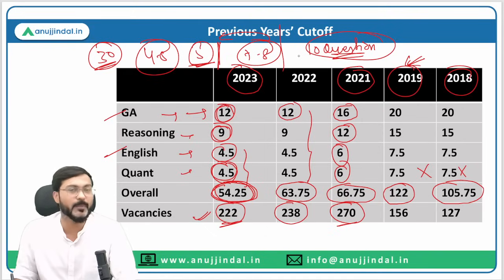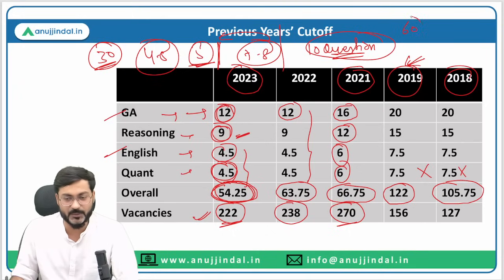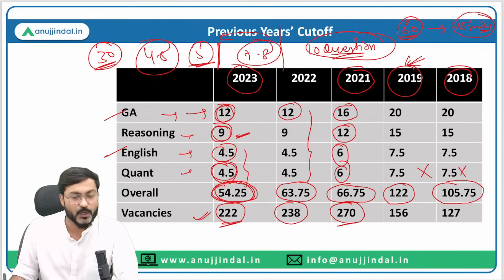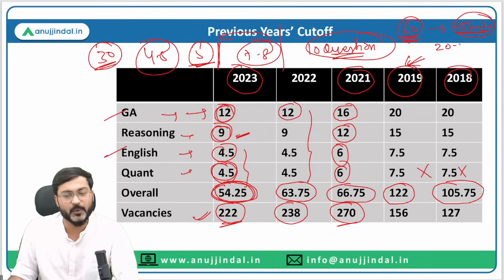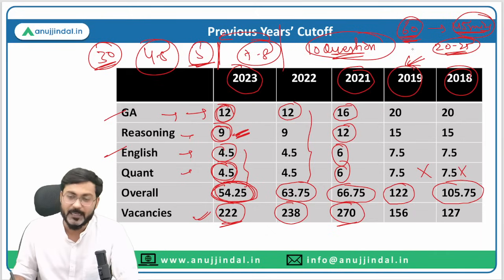You'll easily be able to clear the sectional cutoff of Quant. Same goes with Reasoning — there are 60 questions in 45 minutes. You cannot attempt all 60, but you can target 20 to 25 questions. Out of those 20 to 25, you'll easily get 9 marks, clearing the sectional cutoff of 9.